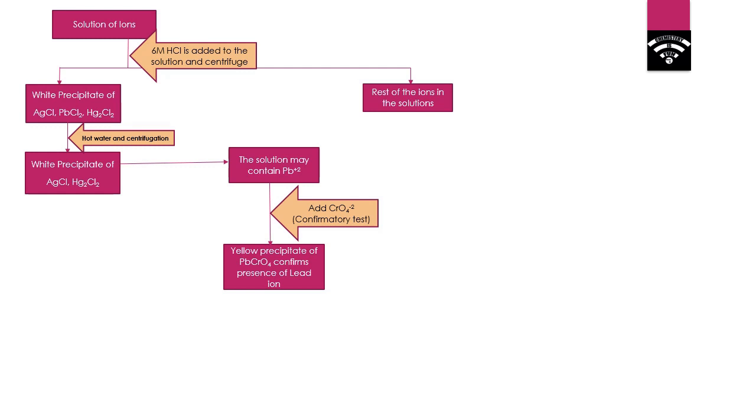Here is the reaction: Pb²⁺ + K₂CrO₄ will form lead chromate plus 2 potassium ions. So if Pb²⁺ is present in the main solution, then we find the yellowish precipitate; otherwise, we will not find it.